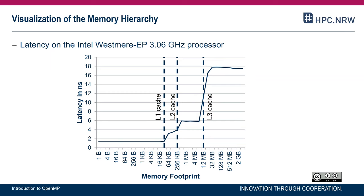As soon as we exceed one cache level, the next becomes visible. We can see the latency for L1, L2, L3, and main memory as significant differences in latency time, and consequently in the speed of memory accesses. It is visible and measurable. Roughly, from main memory to L1 cache, there is a factor of 10 difference.